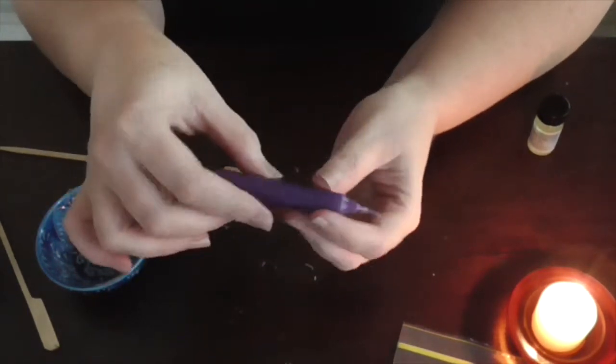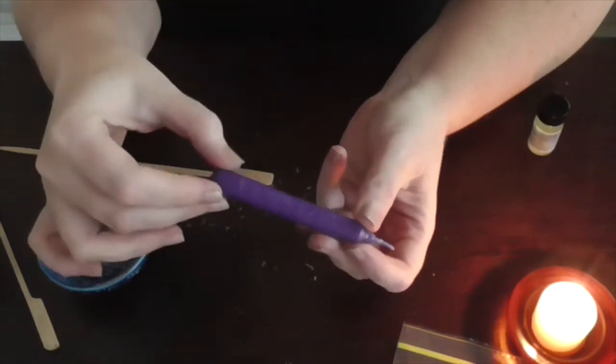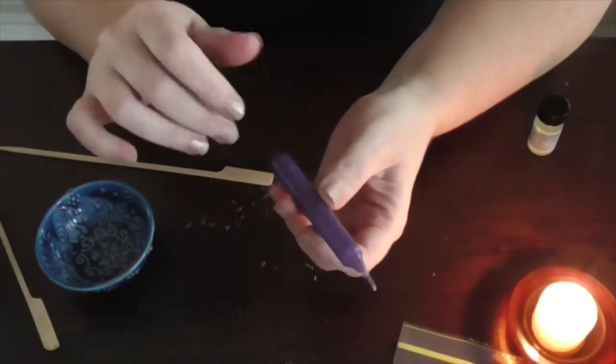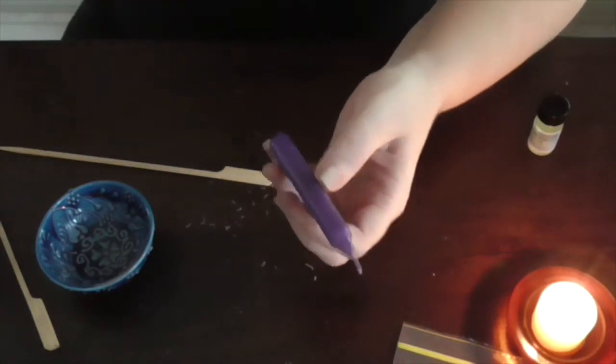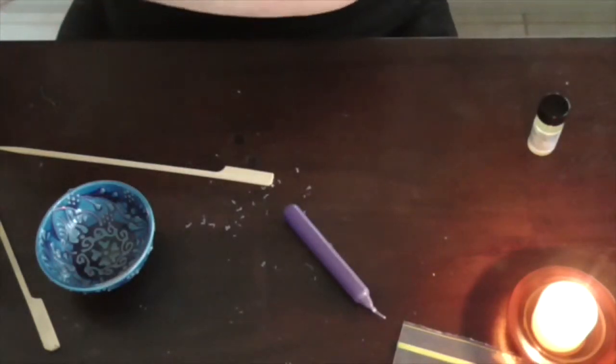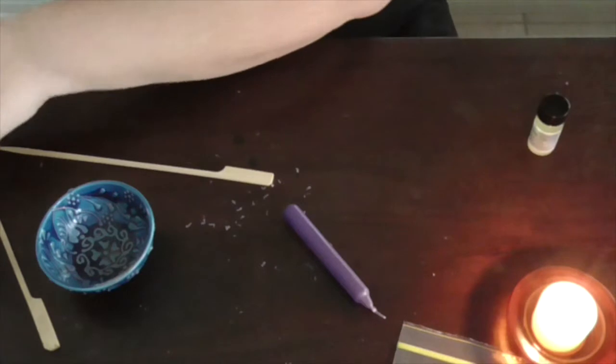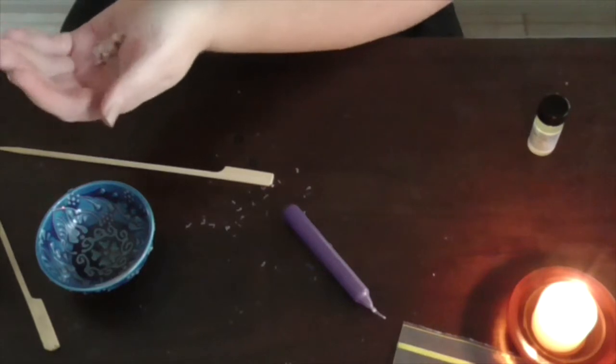And you can also, when you put oil onto your candle, you can put a little bit of powder on there. So you can powder up some herbs.